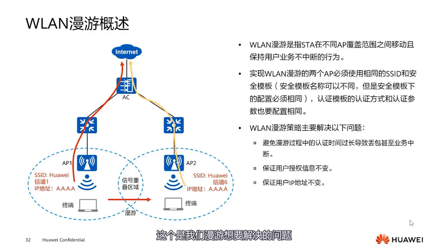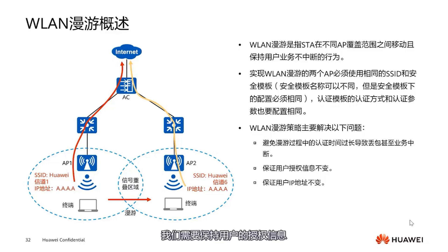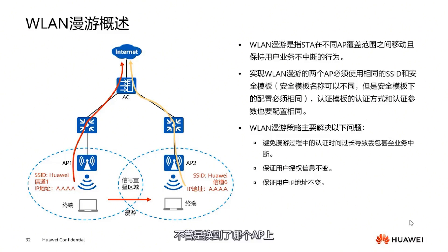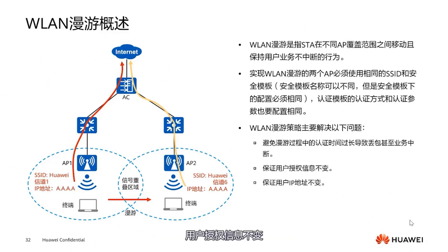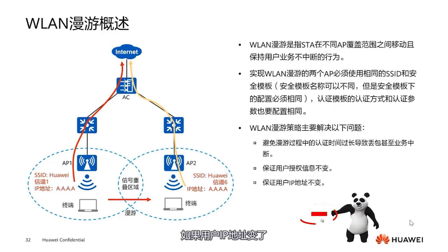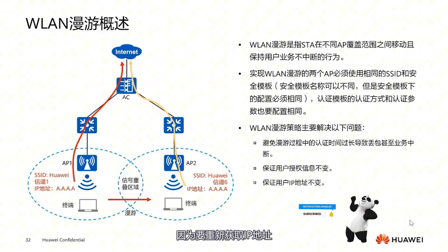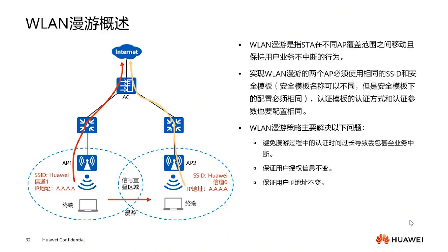Services must not be interrupted. This is the problem that roaming aims to solve: avoiding long authentication times, packet loss, or service interruptions. We need to maintain the user's authentication information, ensuring that the user's IP address remains the same. During the roaming process, no matter which AP is switched to, it must ensure that the user's IP address remains unchanged and the user's authorization information stays the same. If the user's IP address changes, roaming wouldn't be possible, because it requires reacquiring an IP address and the connection would definitely be lost.